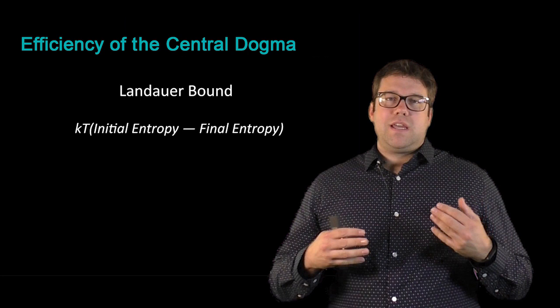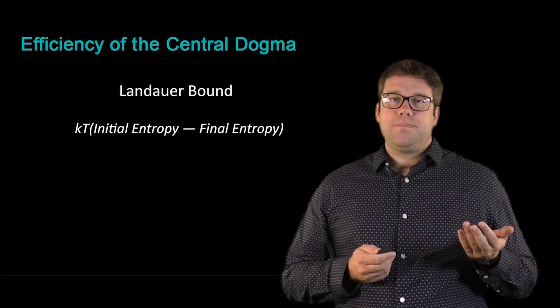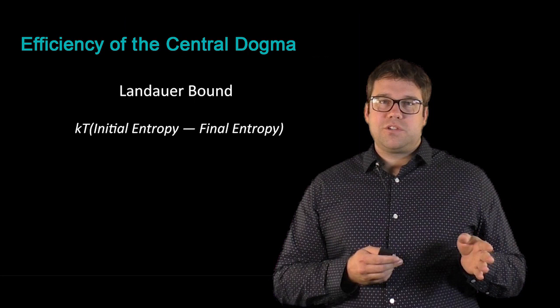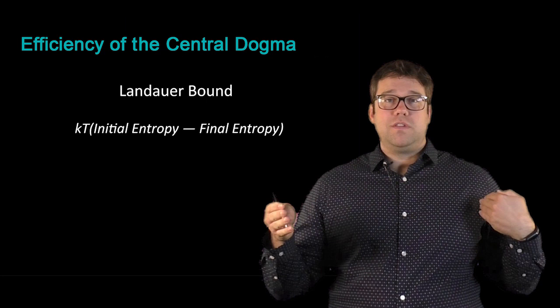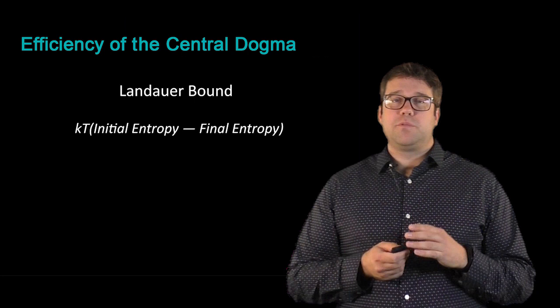Landauer's Bound in the physics community is a way of saying take a particular abstract computation and tell me what is the minimal amount of energy that any physical device could use to implement this abstract computation. What that turns out to be, in a general sense, is Boltzmann's constant times temperature times the change in the entropy over the course of this computation. So the initial entropy at the beginning of the computation minus the final entropy after you've performed all the computations you care about.